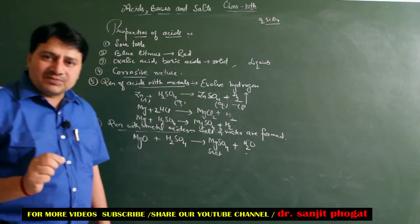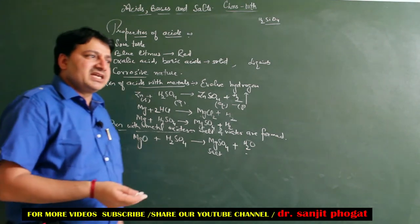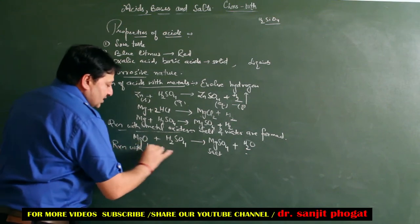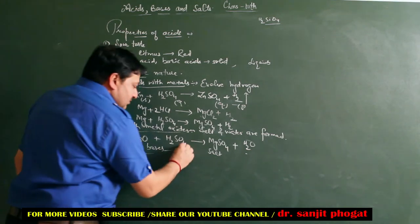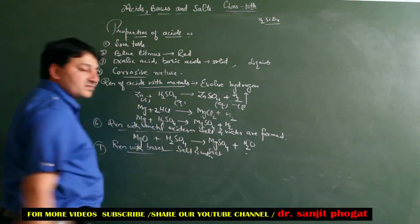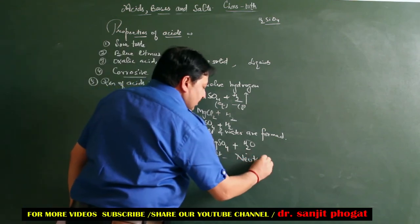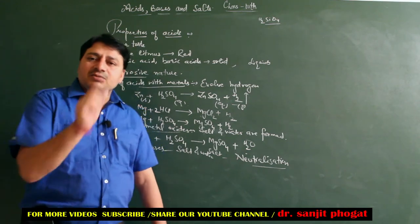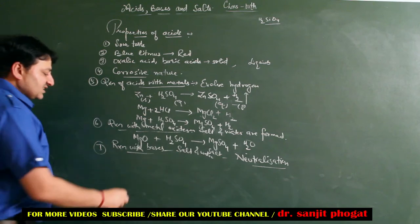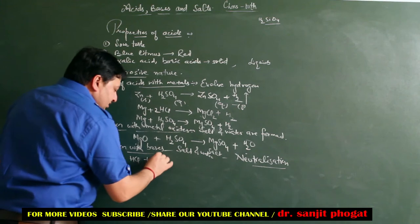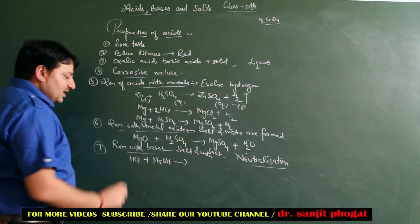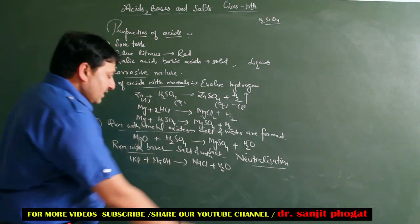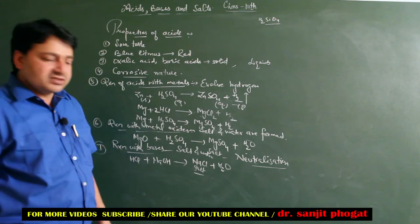एक और case में भी Salt and Water बनता है - जब Acid की reaction Bases के साथ करवाएंगे। इसका special नाम है - Neutralization Reaction। Acid और Base मिलते हैं तो reaction का नाम Neutralization है और products हैं Salt and Water। जैसे HCl acid है, NaOH base है - इन दोनों को मिलाएं तो NaCl plus H2O बनता है। NaCl Sodium Chloride वही नमक जो घर में खाते हैं।